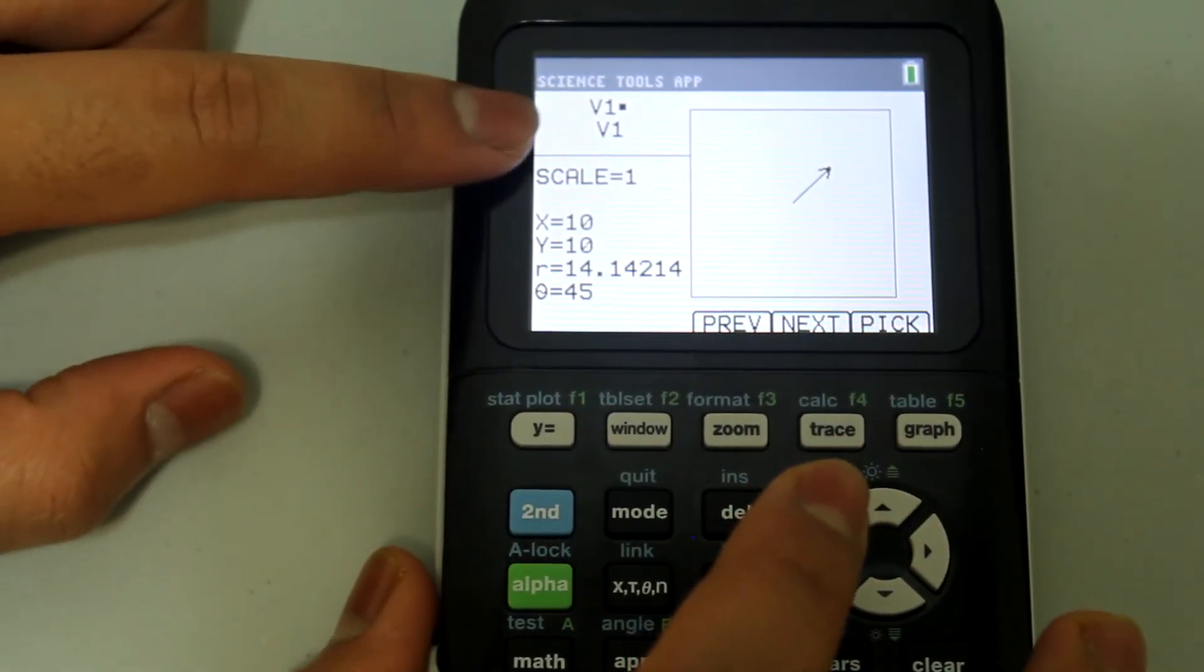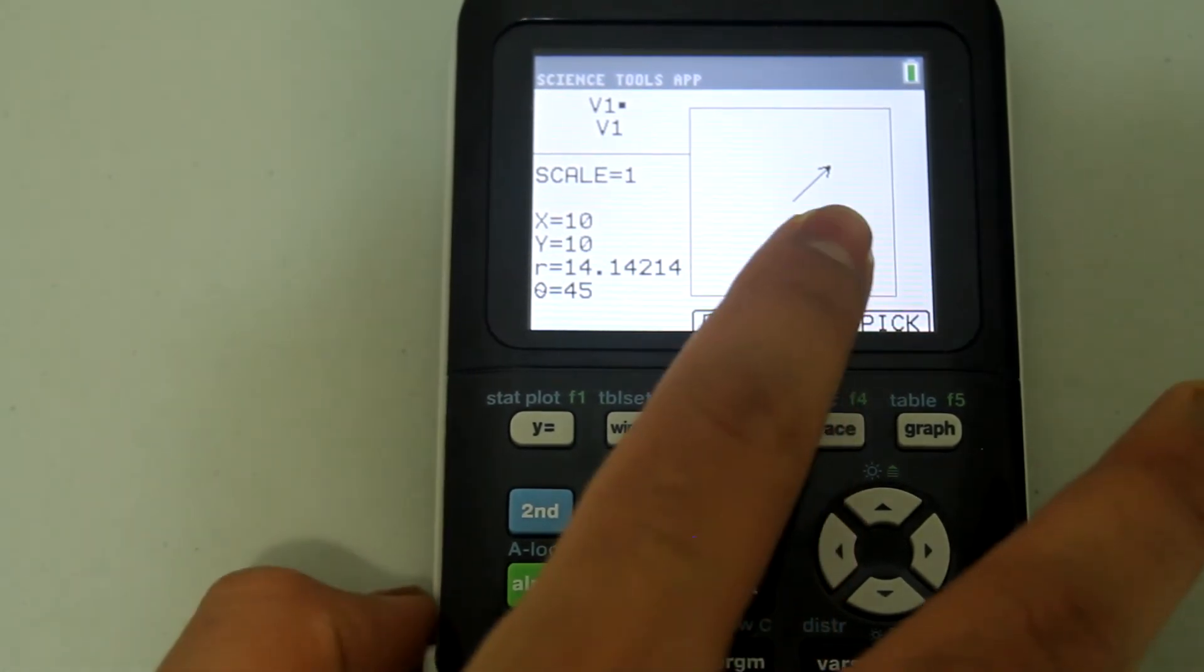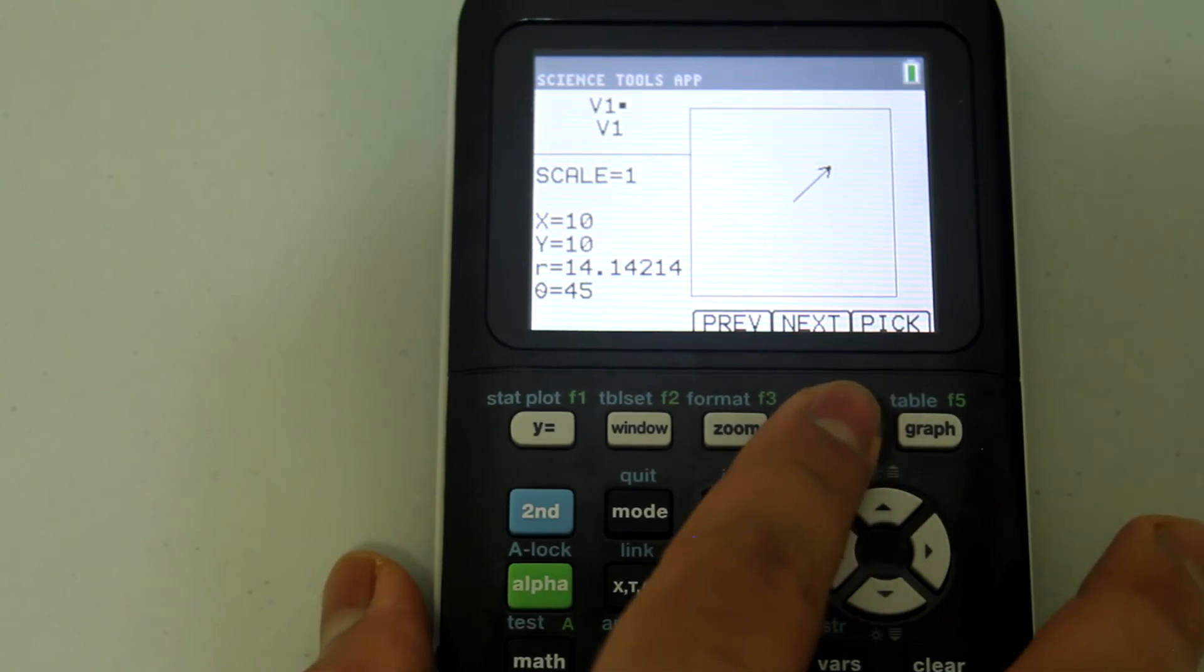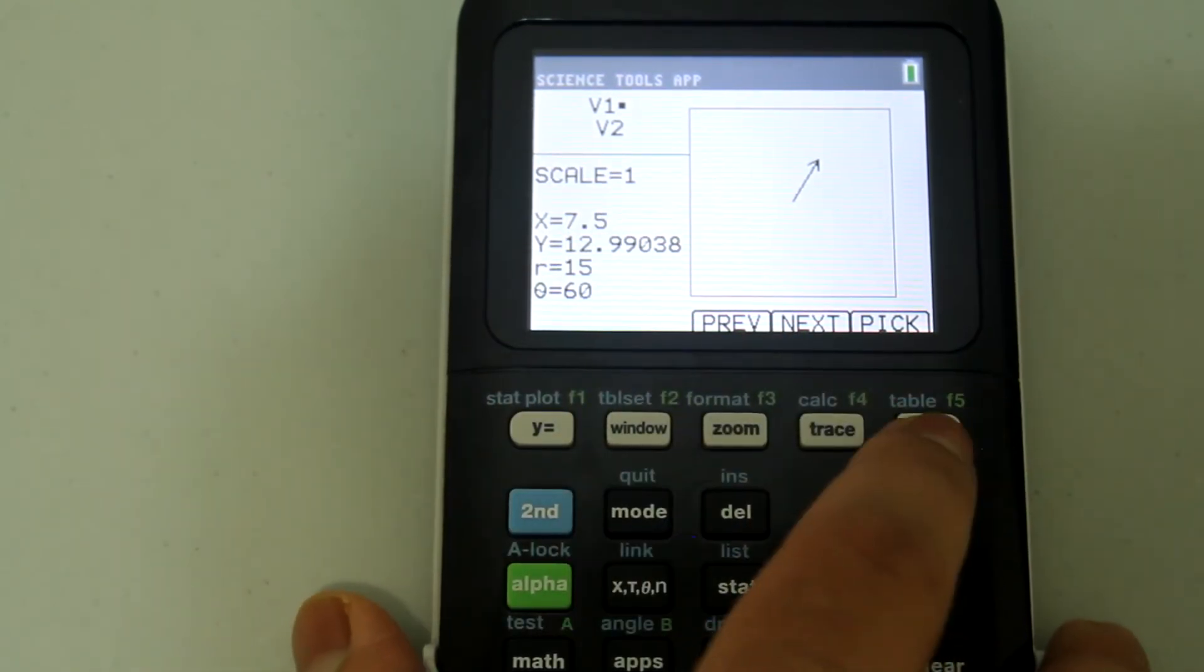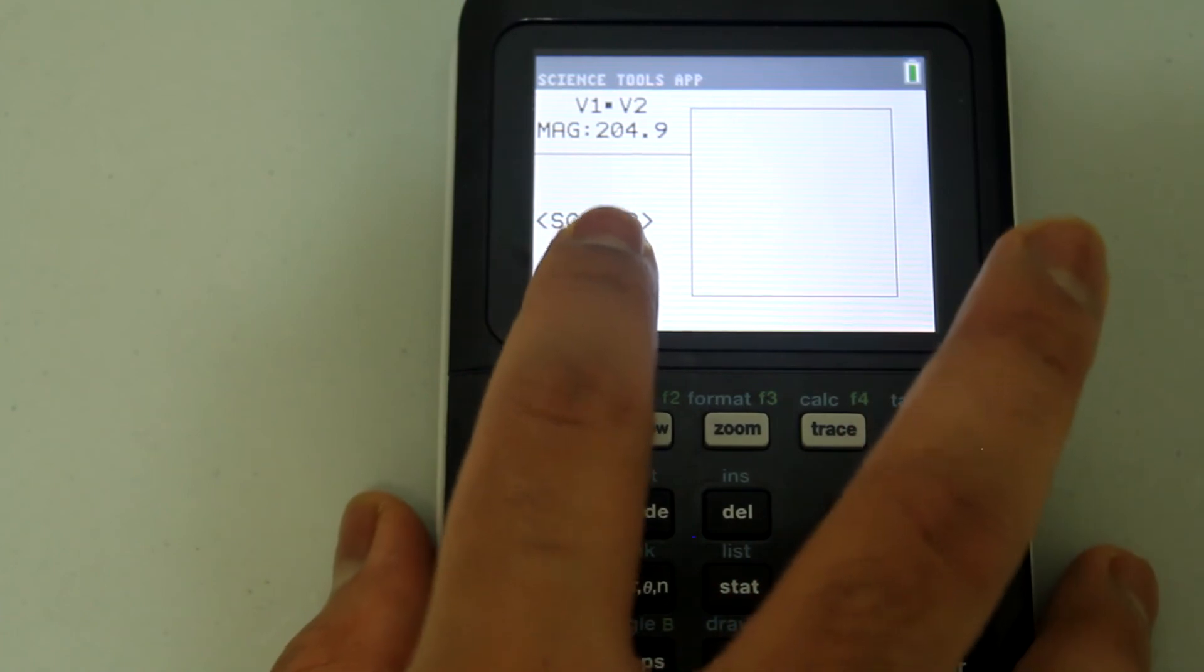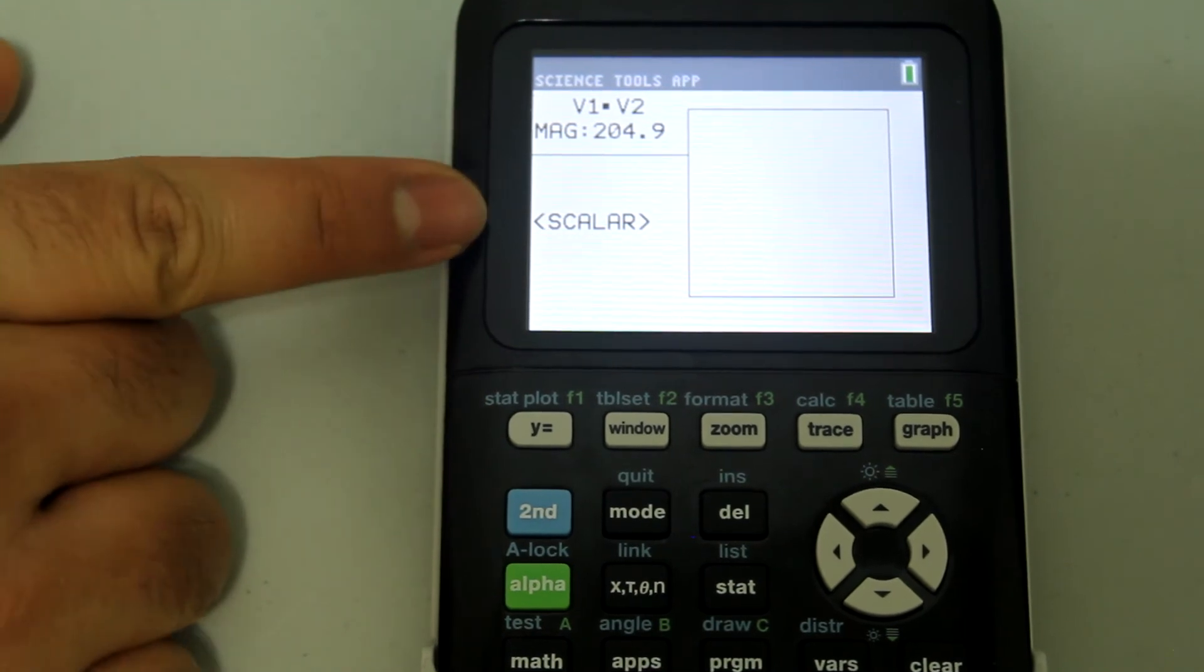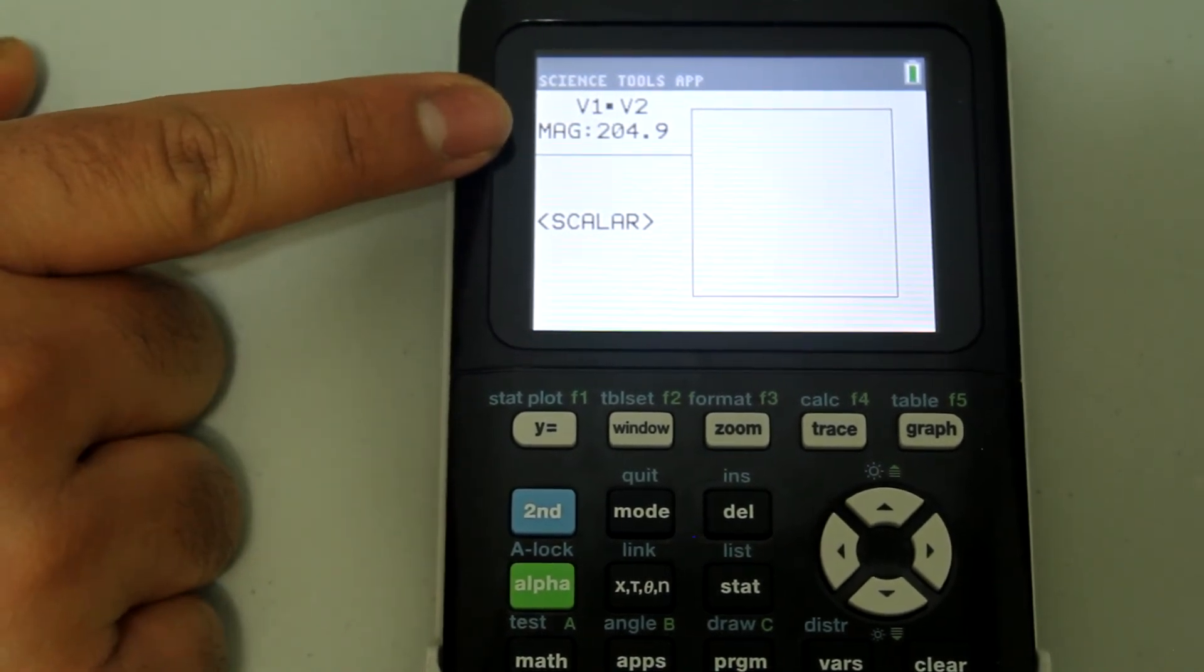Hit the button under the dot which is zoom and now you see that the dot pops up. It's doing V1 dot V1 but we want to do V1 dot V2. Go ahead and hit next and now we have V1 dot V2. Hit pick and notice that we get a magnitude. As we know that dot products are scalar so it's telling us that the answer is a scalar and it's giving us the magnitude.